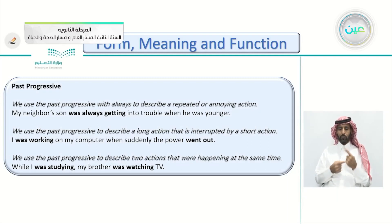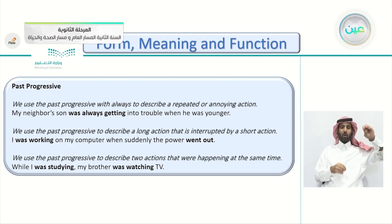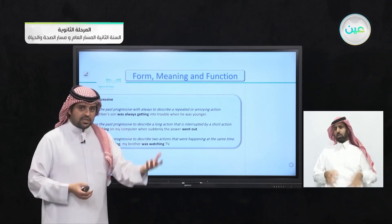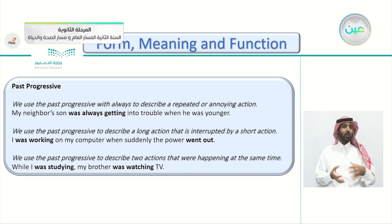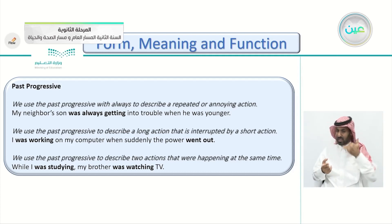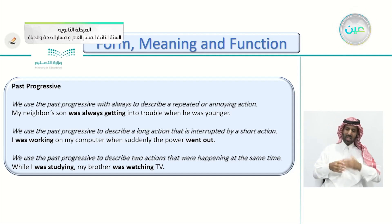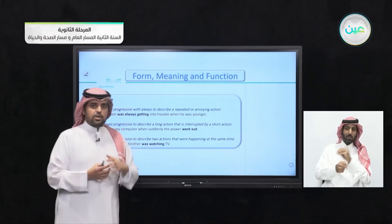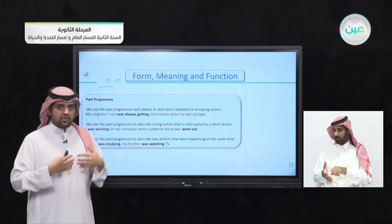We also use the past progressive with 'always' to describe a repeated or annoying action. When you're annoyed at someone, you say things like 'you're always doing this.' For example: 'My neighbor's son was always getting into trouble when he was younger' — expressing annoyance about a repeated past behavior.